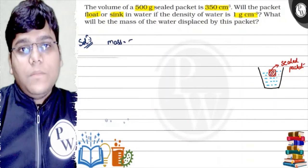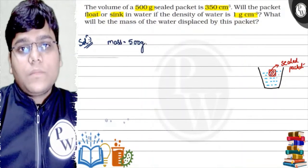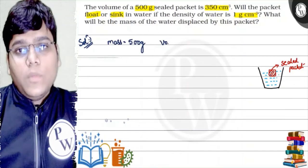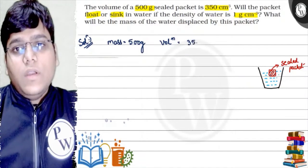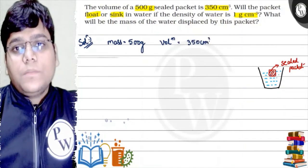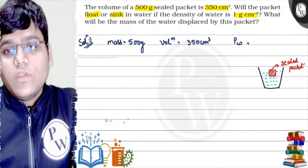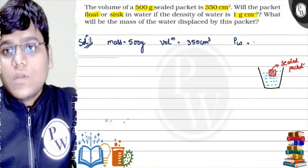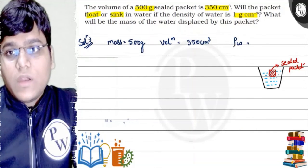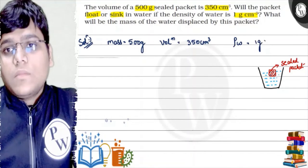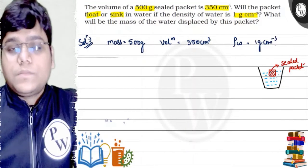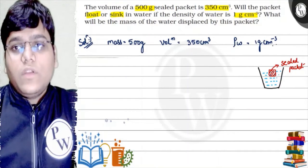How much mass is given? 500 grams. How much volume is given? 350 cm³. I will represent the density of water. I will represent the row. The symbol is called row. This is actually ρ. This is 1 gram per cm³. Okay? This is density of water.